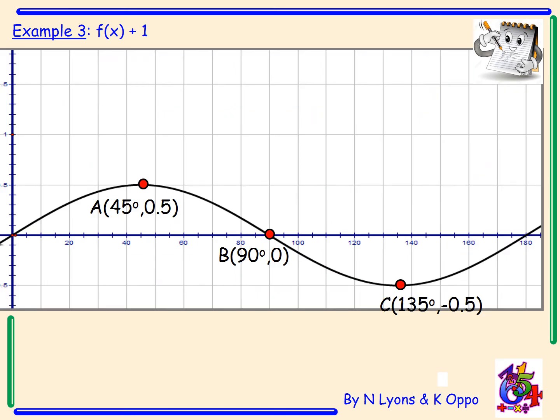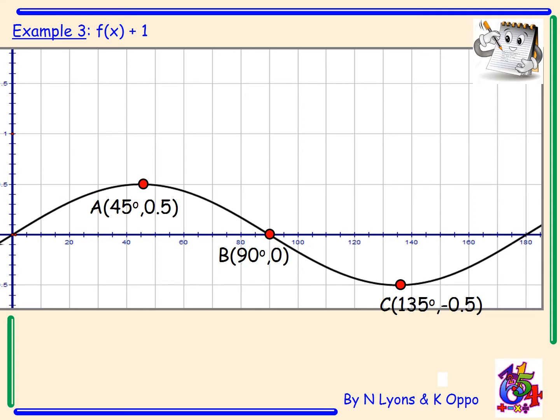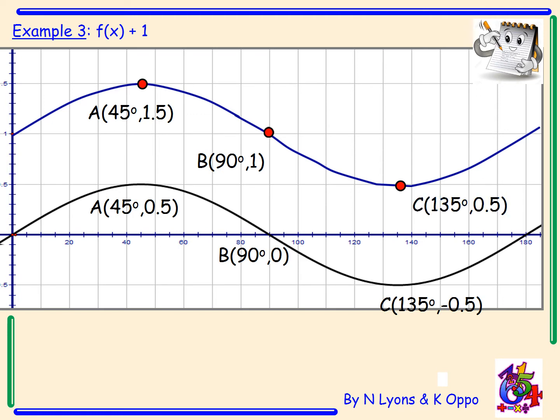Example three: f(x) + 1. Here we have a sine curve and what we have to do is add one to each of the coordinate points and move the graph up one place. Our new coordinates become A(45°, 1.5), B(90°, 1), and C(135°, 0.5). So all we've done is added one to all of our y-coordinates. And you can clearly see from the graph, it also cuts the y-axis at (0, 1).